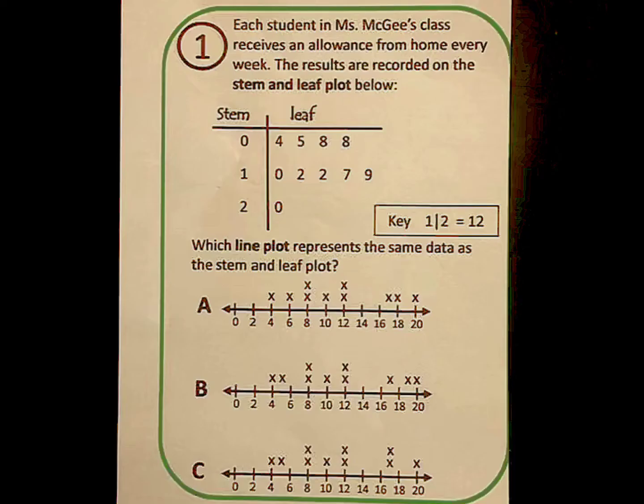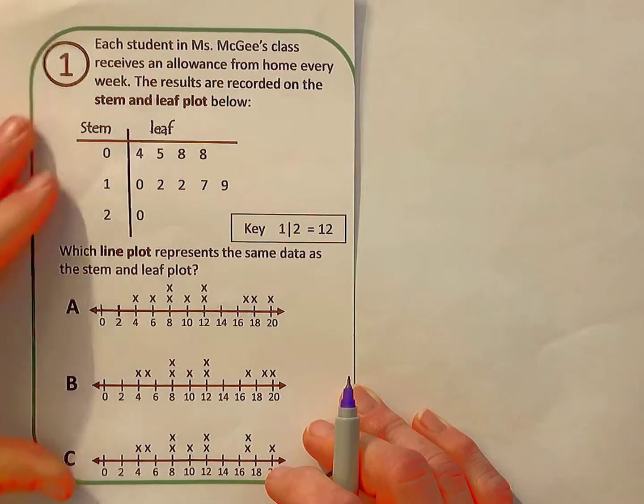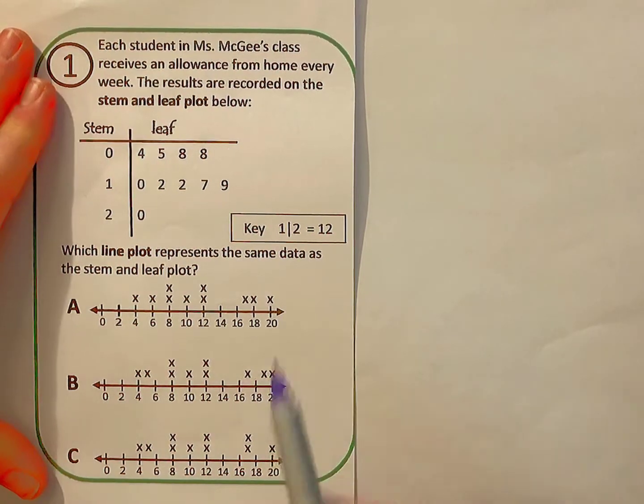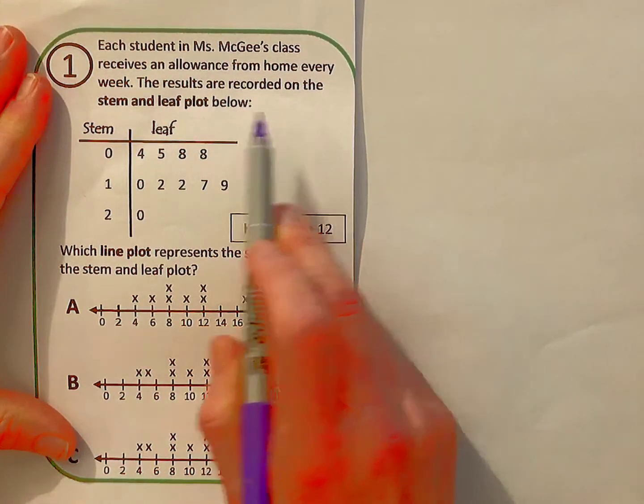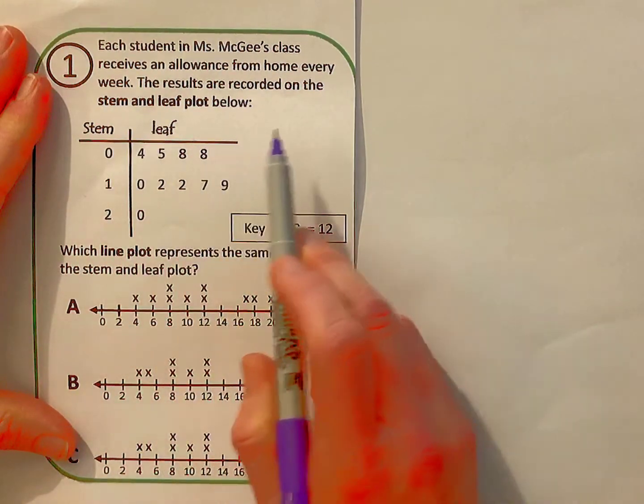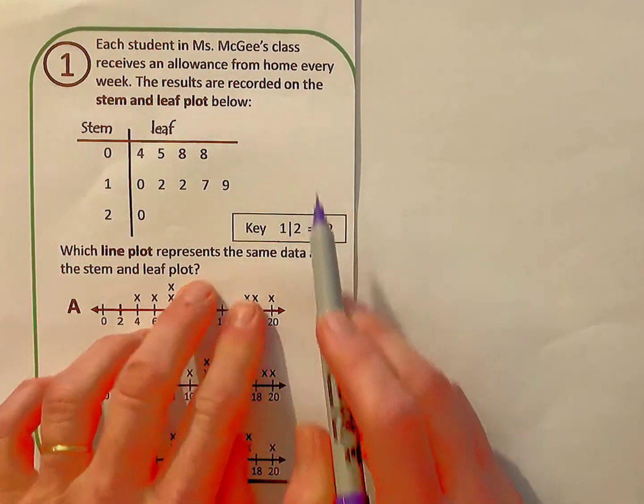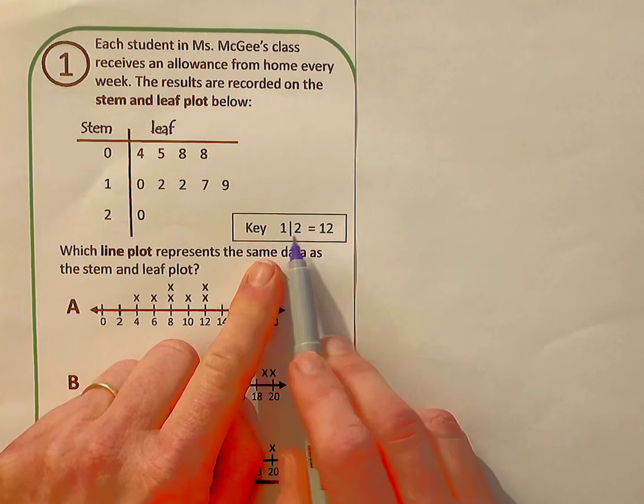Number one. Each student in Mrs. McGee's class receives an allowance from home every week. The results are recorded on the stem and leaf plot below. Before we can interpret those numbers, we need to first examine the key. According to the key, 1 line 2 stands for 12.